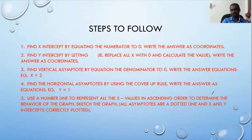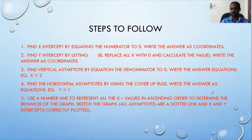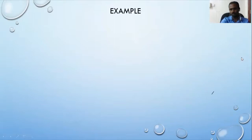Next, use a number line to represent all the x-values in ascending order to determine the behavior of the graph. You will see three different types of graphs in one axis because of the vertical and horizontal asymptotes. Whether the graph will fall below or above the x-axis is what you have to find in step five. We'll look at the example now.